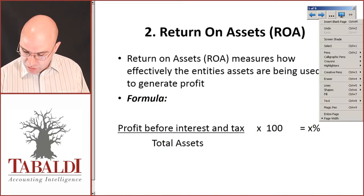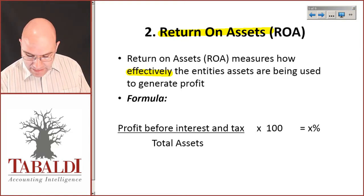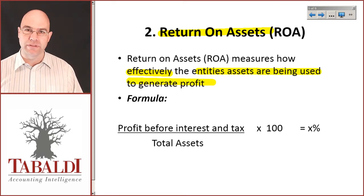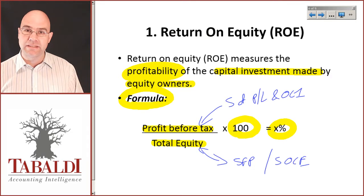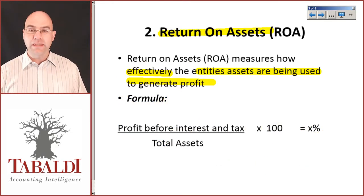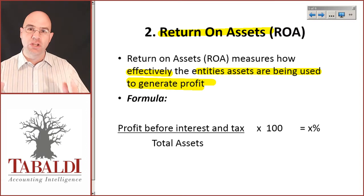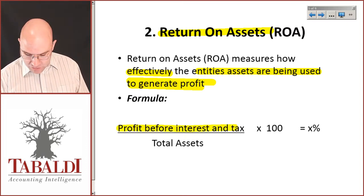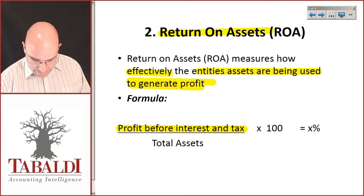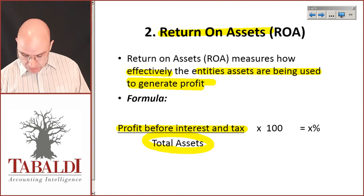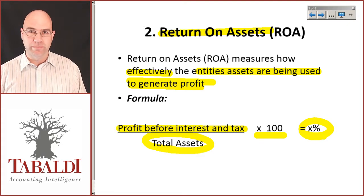Next up, we look at return on assets — ROA. Return on assets measures how effectively the entity's assets are being used to generate profit. The company has purchased assets, and we're looking at how effectively those assets generate profit. The formula is profit before interest and tax — we use before interest because we're ignoring financing costs — divided by total assets, then multiplied by 100 to get a return on assets percentage. Learn that formula, please.